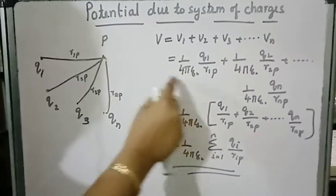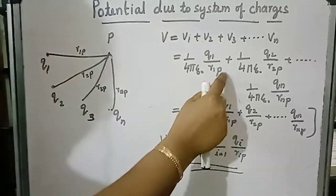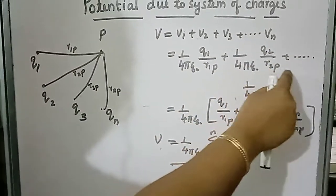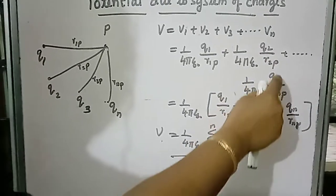That is, V1 is 1 by 4 pi epsilon 0, Q1 divided by R1P, plus V2 is 1 by 4 pi epsilon 0, Q2 divided by R2P, et cetera, 1 by 4 pi epsilon 0, Qn divided by RnP.